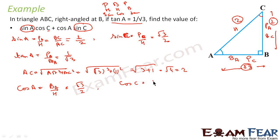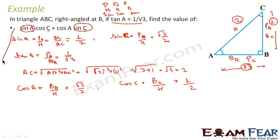Cos C equals B of C divided by H, and B of C is 1 while H is 2, so cos C equals 1 by 2. Now I have all the values: sin A, sin C, cos A, and cos C, so I can use them in the expression.